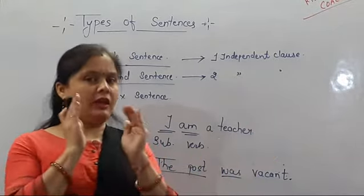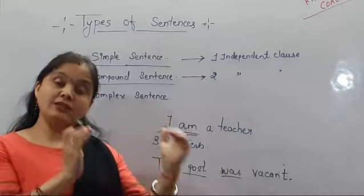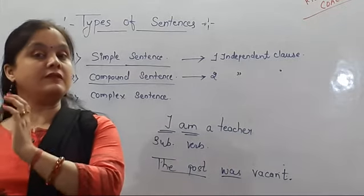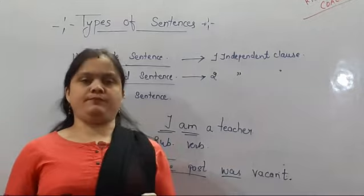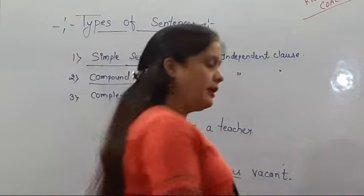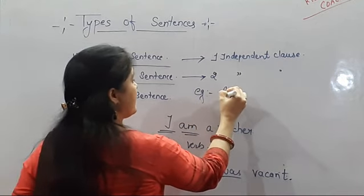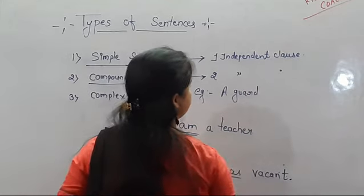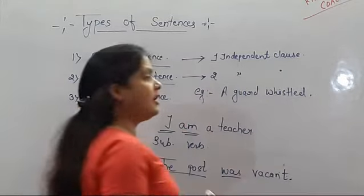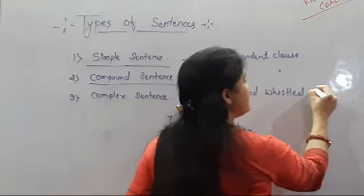In a compound sentence there are two independent clauses. If in a simple sentence one clause makes the thought clear, in a compound sentence to clear one thought, we need another clause — otherwise it feels incomplete. Here is an example of a compound sentence: 'The guard whistled.' That is one sentence. And: 'The train moved.' That is the next sentence.